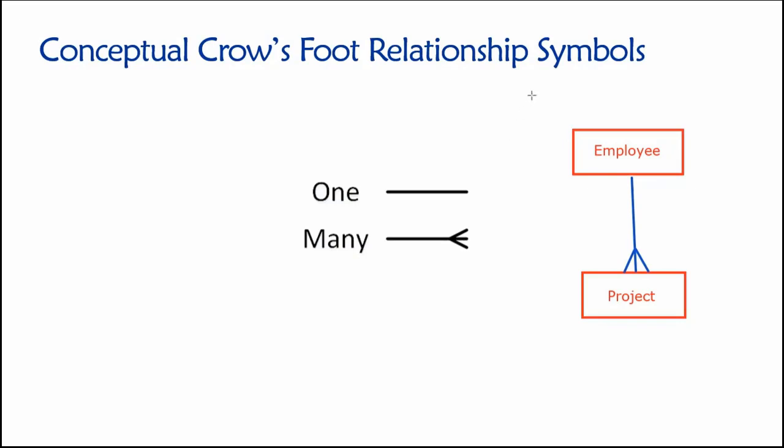I do want to highlight once again that what we're seeing here are conceptual relationship symbols. And the reason why is, well one, we're not showing any cardinalities. And two, with these conceptual symbols, we can implement something like a many to many design, even though it is infeasible to directly implement such a design in a relational database.